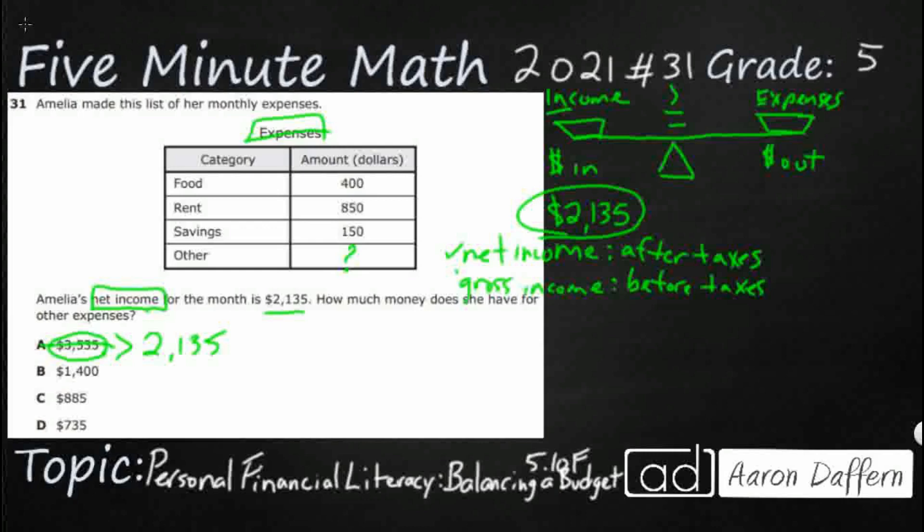So what we need to figure out is first, how much money is she even spending so far? So let's check that: $400, $850, $150. So between her food, her rent, her savings, how much is she actually even using right now, spending right now?